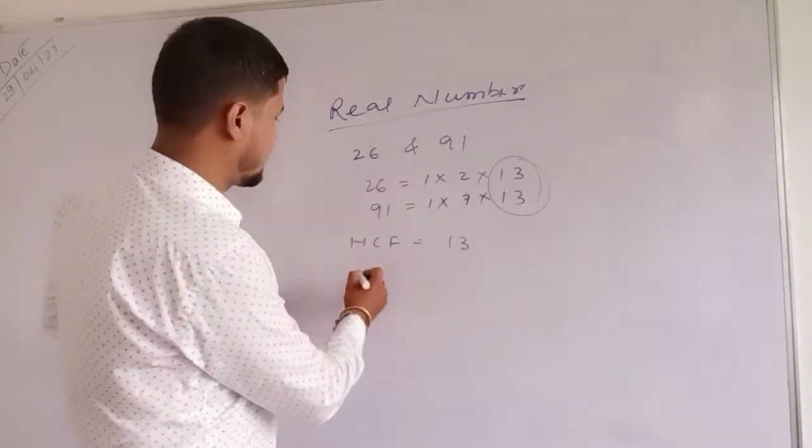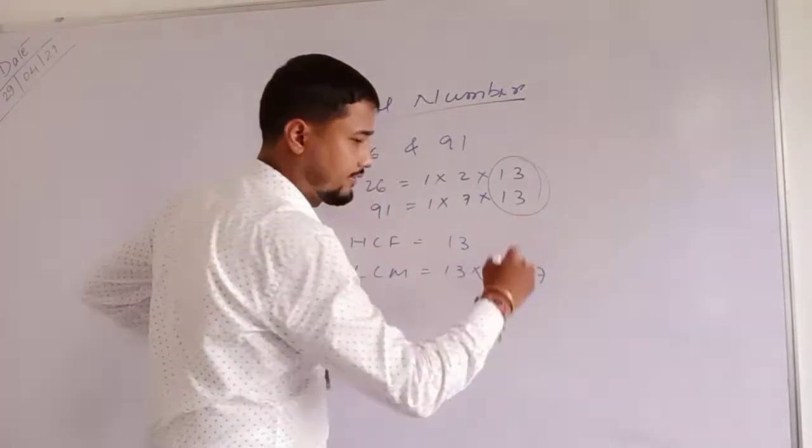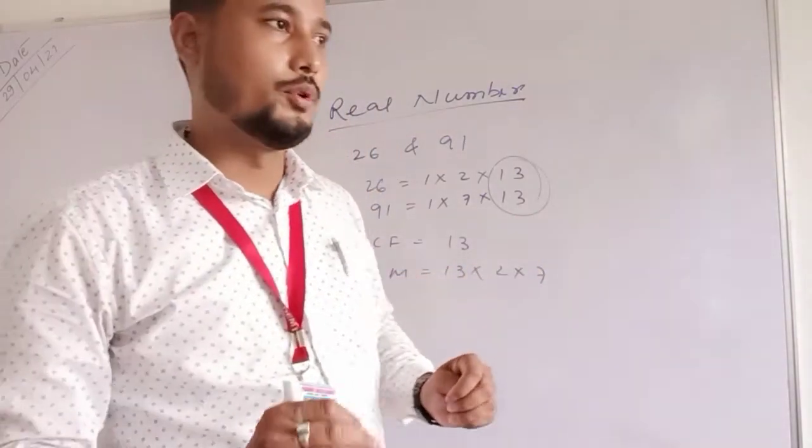And LCM: 2 into 13 into 7. But in your chapter you will have to find the HCF using Euclid's division algorithm. What is Euclid's division algorithm?